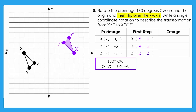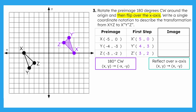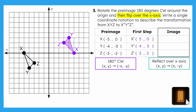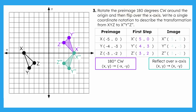Let's move on to our next transformation: a reflection over the x-axis. Go ahead and reflect X, Y, Z prime over the x-axis and fill out the last column with the new coordinates. You may use the coordinate notation to help you reflect. Pause the video now. And here is X, Y, Z double prime, and its coordinates.